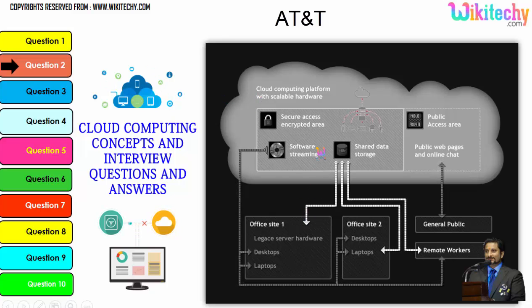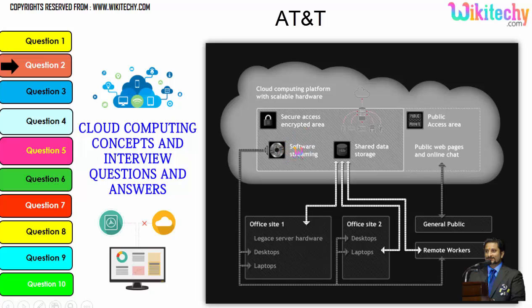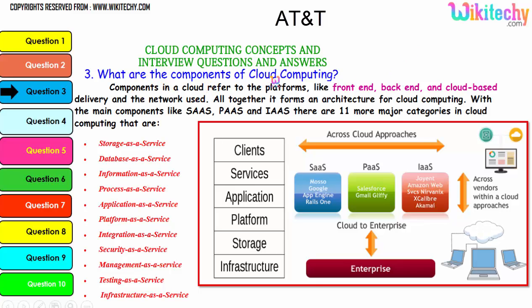Cloud computing has a public access area with public web pages for end users, and also secure data access, shared data storage, and software streaming. Companies can use it as a private kind of cloud, and the public can use it to access web pages or websites. Now let's talk about the components of cloud computing. Components in a cloud refer to the platforms like front-end, back-end, the cloud-based delivery, and the network used — all together they form an architecture for cloud computing.